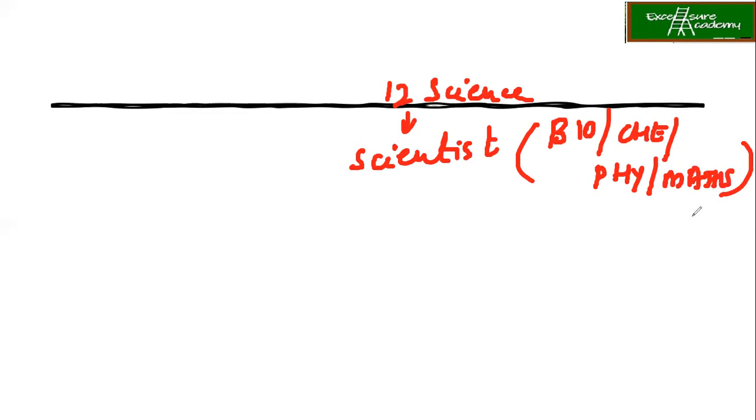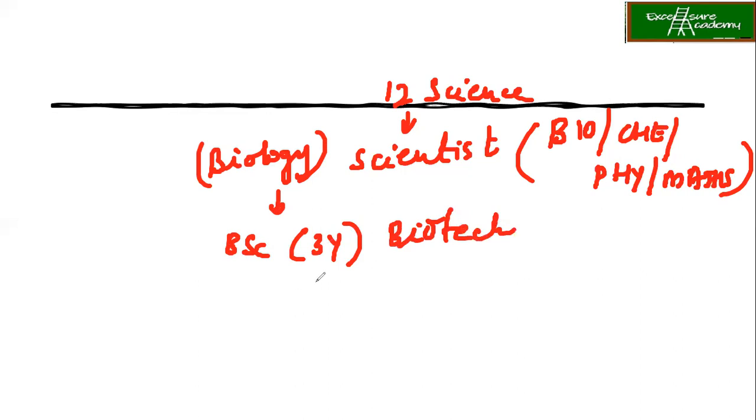Now to become a scientist first, for example, let's talk about a biological scientist. So let's talk about biological scientist. Now, if you want to do biological scientist, so what do you have to do? First is your BSc. That is again your three years course. Now, for example, let us say like what I have done. So what I have done is BSc biotech.